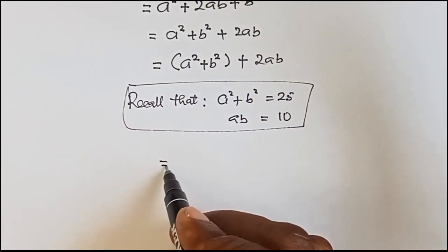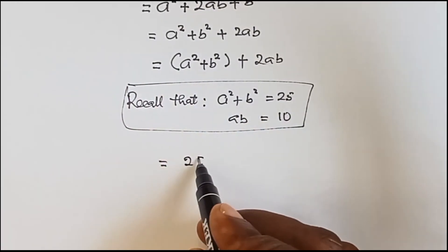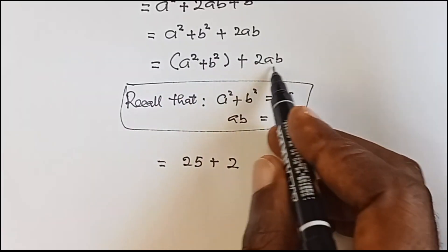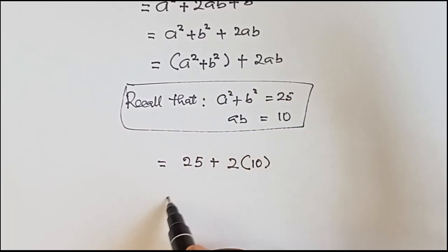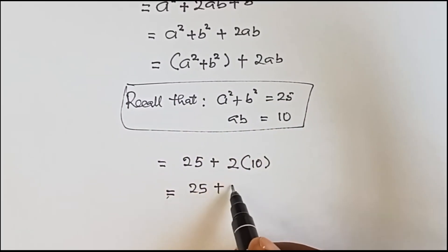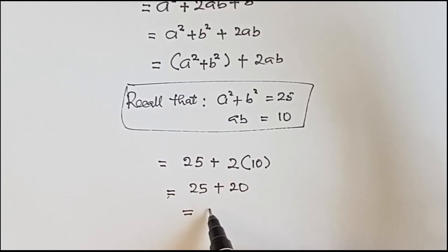From there let's go back to this. What is a² + b²? It is 25, plus this 2, then ab what is ab? ab is 10 so we multiply it by 10. So we have 25 plus 2 times 10 is 20, and 25 plus 20 gives us 45.